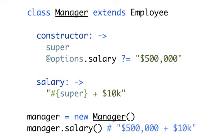So now this manager not only does he get $500,000 a year, which is pretty nice, but he also gets a 10K bonus, which I guess at that point is just pennies in the dollar. But anyway, that's my little tip on classes.